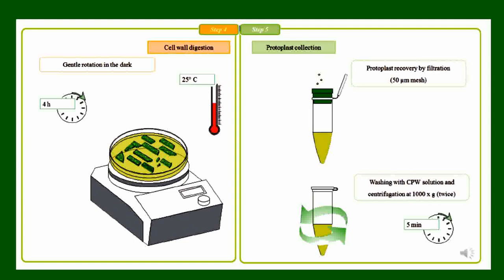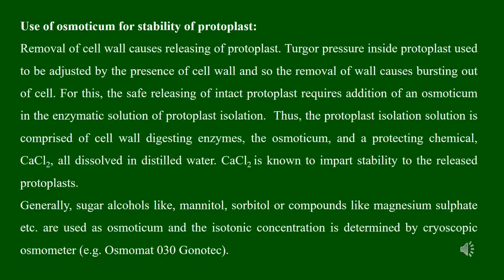The collected protoplasts are repeatedly washed with a solution comprising calcium chloride along with osmoticum and nutrient medium. This washing is repeated several times, each time centrifuging the protoplasts for a certain period. While isolating and culturing plant protoplasts, the role of osmoticum is very important.